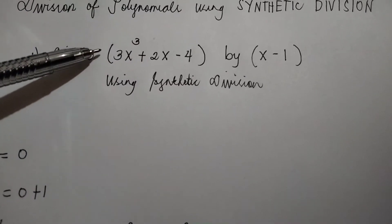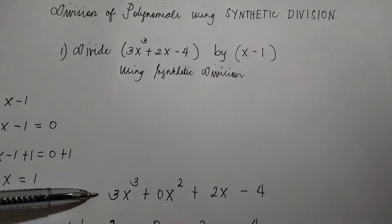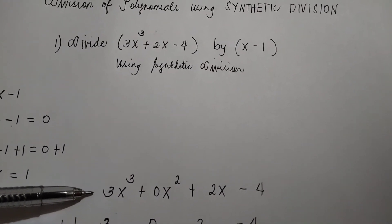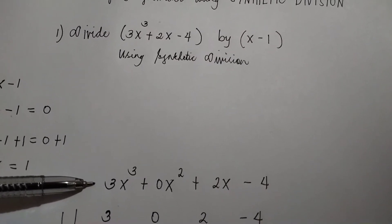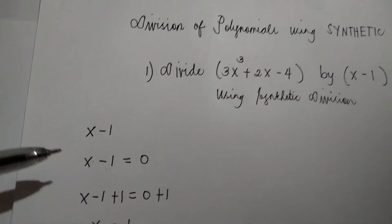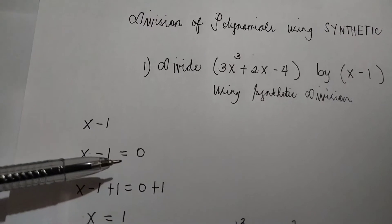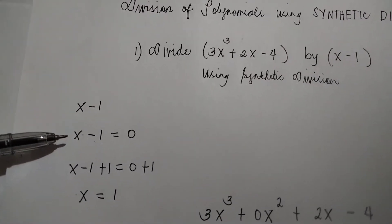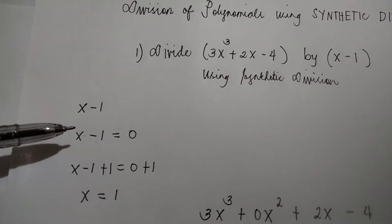The dividend 3x cubed plus 2x minus 4 becomes 3x cubed plus 0x squared plus 2x minus 4. Then, equate the divisor x minus 1 to 0, that becomes x minus 1 equals 0. Then take the additive inverse of negative 1, which is positive 1.